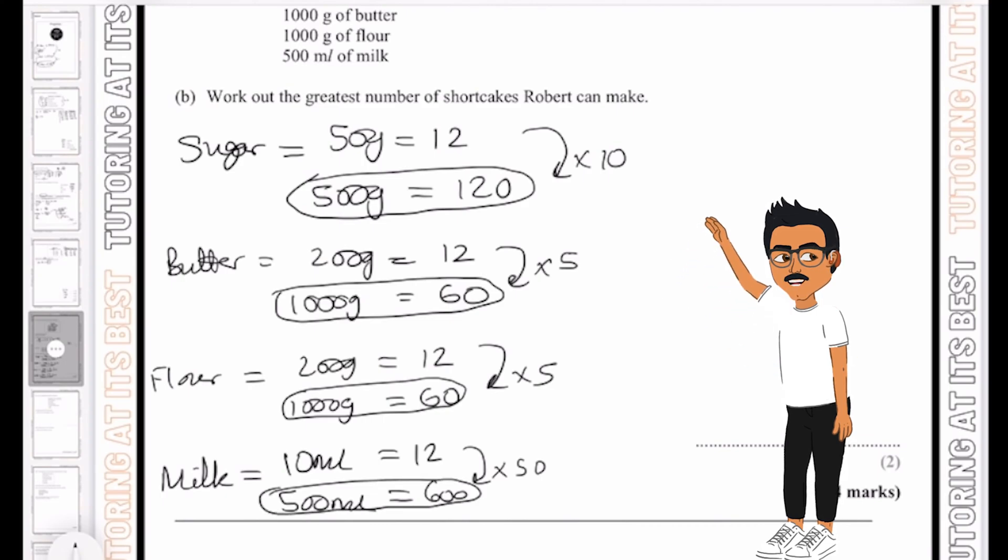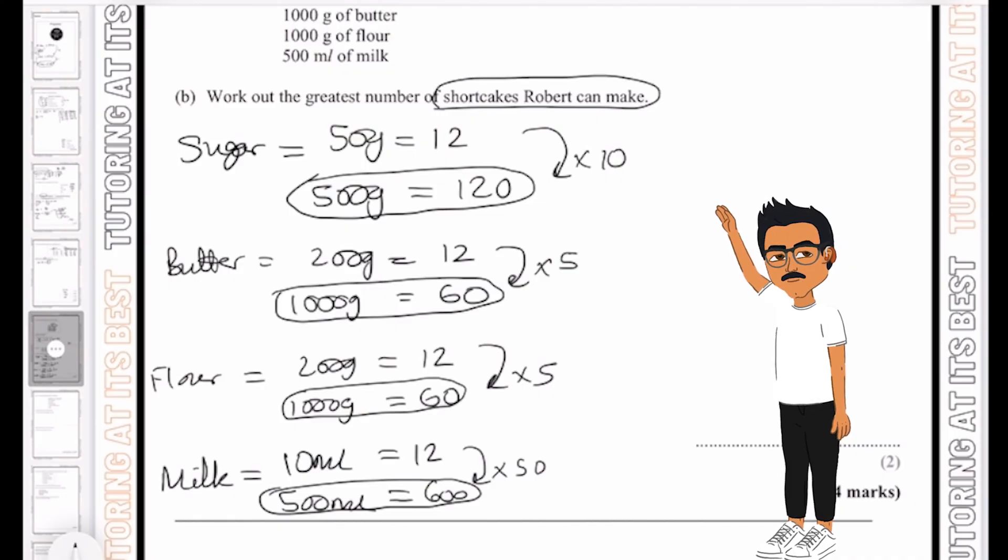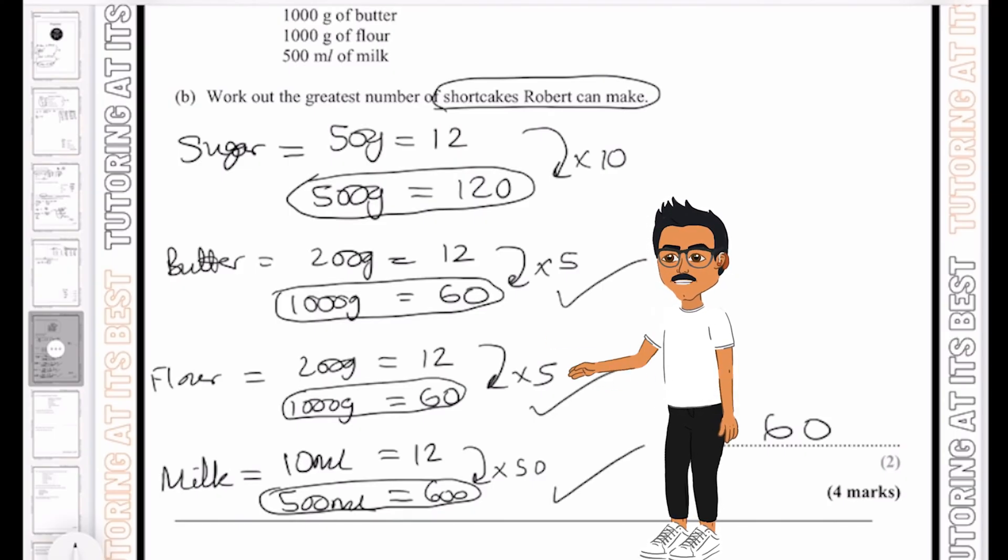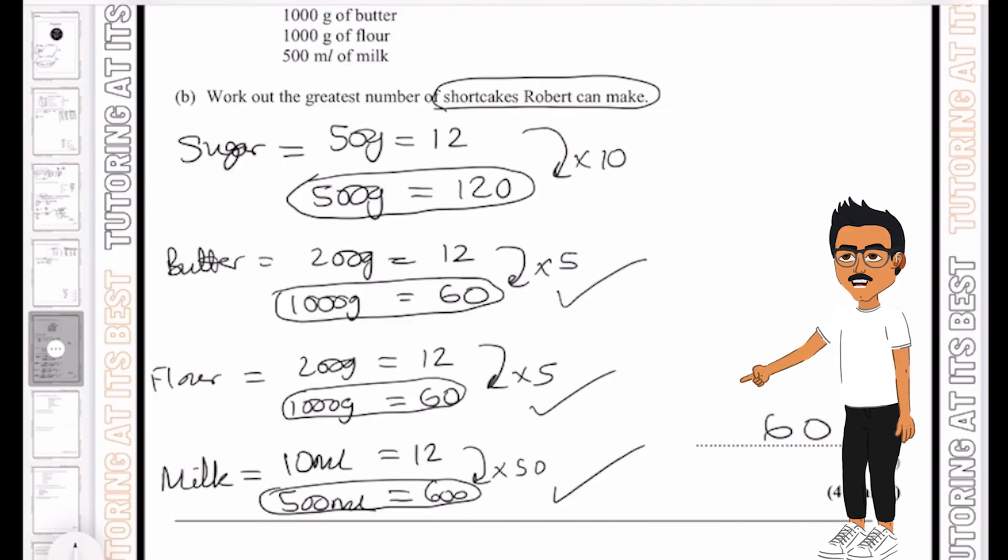And there we are. So now we've gone ahead and done that. The greatest number of shortcakes that Robert can make is going to be 60. And the reason we know this is because three of them are 60. So that means the sugar can also make 60, even though it states 120. But we can't make anything more than 60 because we don't have enough butter, flour or milk.